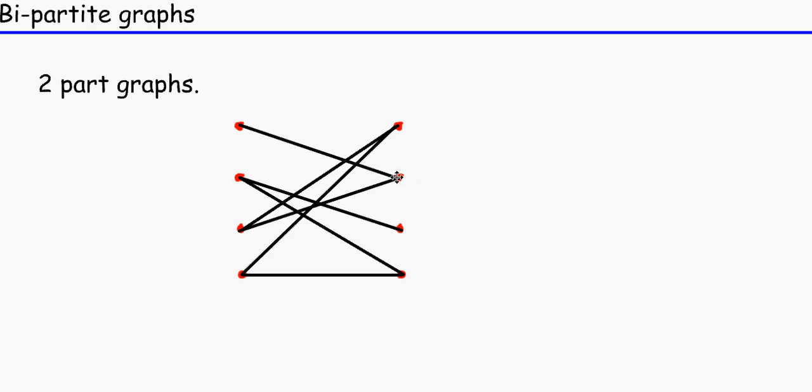And bi means two, like bisexual or bicycle, two wheels. And it's usually written as K1, 2, 3, 4, K4, 4 because this has got four vertices on this side and four vertices on the other.